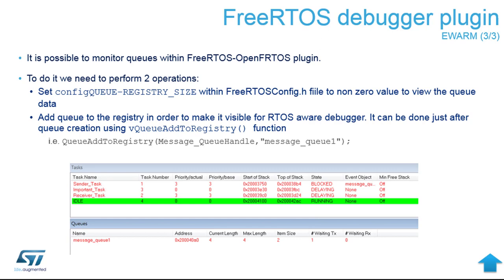You can observe how much the tasks load the microcontroller, how much memory is used, and what states they are in. If a task is permanently blocked, something is wrong with its activation. You can check if the priorities are correct and what is needed in total.